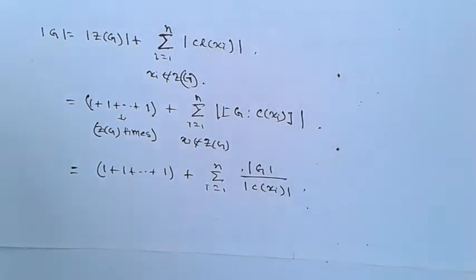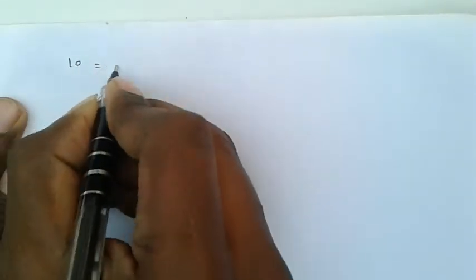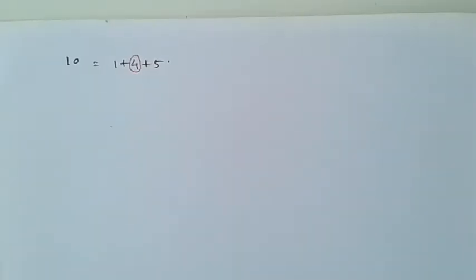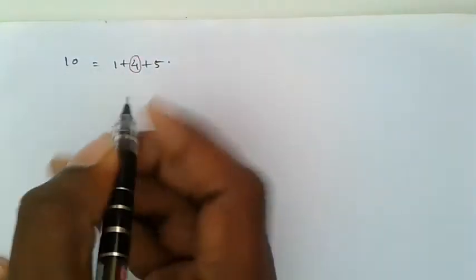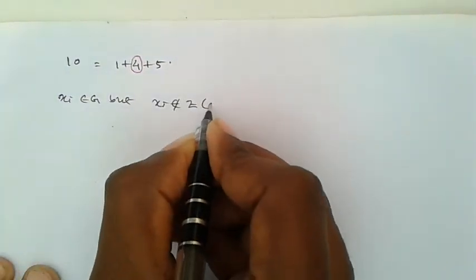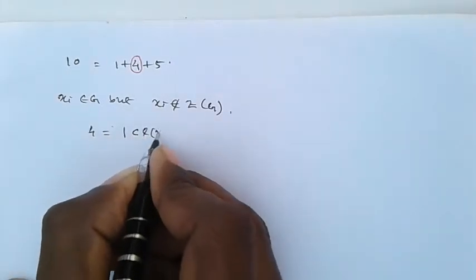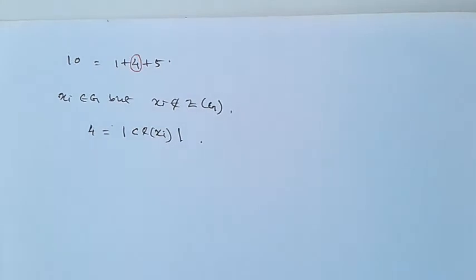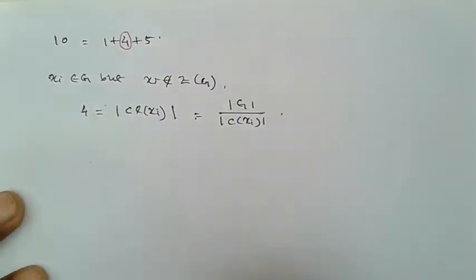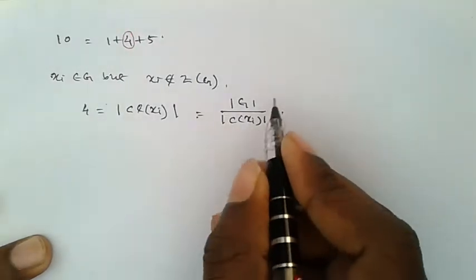Looking at the first option: 10 = 1 + 4 + 5. Here, 4 is not a divisor of 10. From the class equation, if x_i is not in Z(G), then the order of the conjugacy class of x_i equals [G : C(x_i)]. Since C(x_i) is a subgroup of the finite group G, by Lagrange's theorem, the order of C(x_i) must divide the order of G.